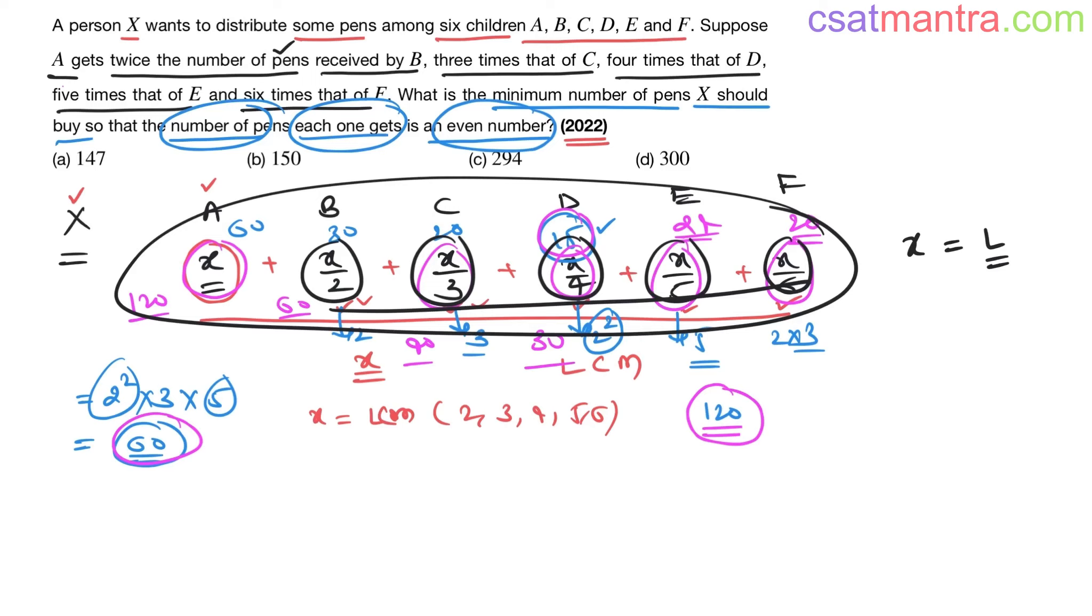So X should be multiple of 2, 3, 4, 5, 6. Common multiple. X is 120. Now, sum 120 plus 60 plus 40 plus 30 plus 24 plus 20. See, the last digits. Sum of last digits is 4. My answer should have the last digit 4. See, is my answer. You can add all of this and check.